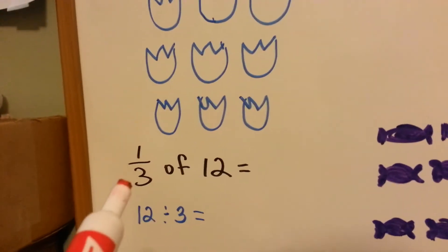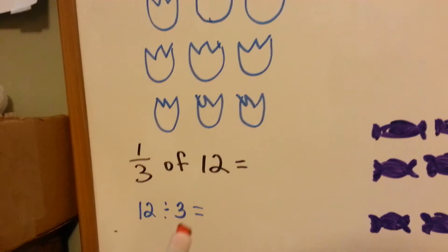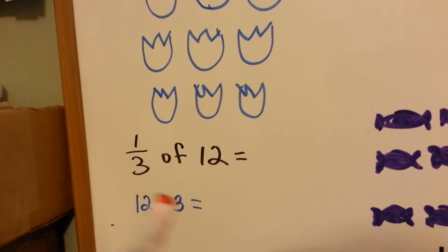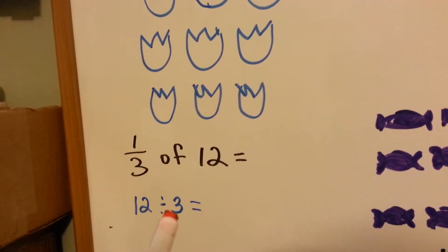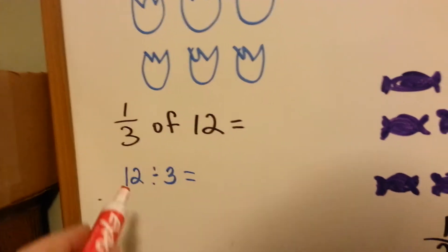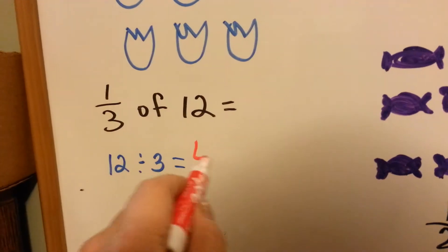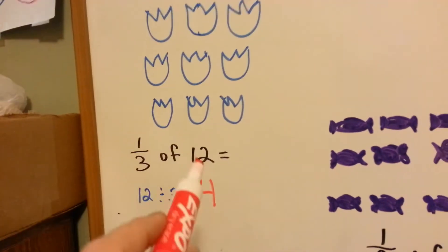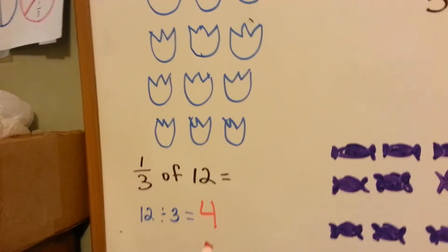So in order to find out what one third of 12 is, we're just going to divide 12 by 3. And if you know your times table, you know that 3 times 4 is 12. So 12 divided by 3 is 4. So one third of 12 is going to be 4 tulips.